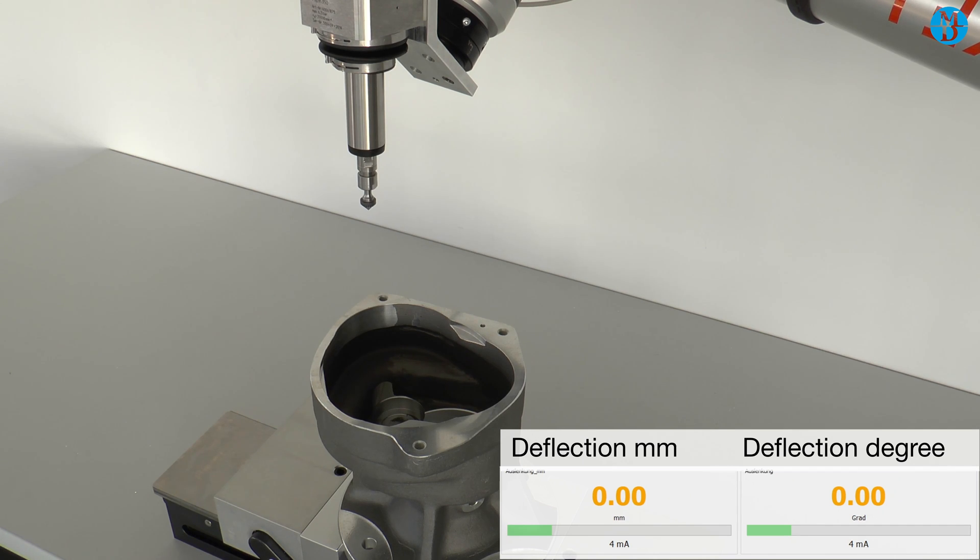To ensure that the correct deflections and speed have been set, we would recommend analyzing the data of five or more parts that have been deburred. Analyzing this data, it should be possible to establish where the lowest speed is and optimize that. The maximum deflection can also be established and also optimized.